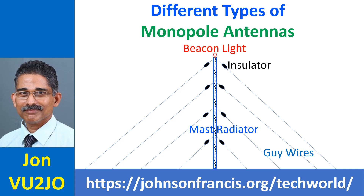Several types of monopole antennas are used for radio transmissions, both amateur and professional. The tall tower antennas often seen near medium wave radio stations are monopole antennas. Unlike an amateur radio tower with a Yagi-Oda directional beam antenna at the top, the tower itself is the radiating element for such broadcast stations. The ground plane for these tower antennas is formed by a set of cables buried under the ground.